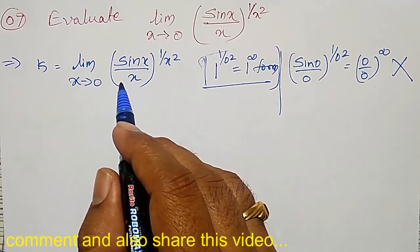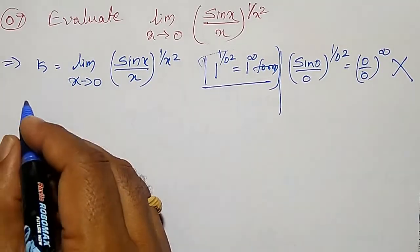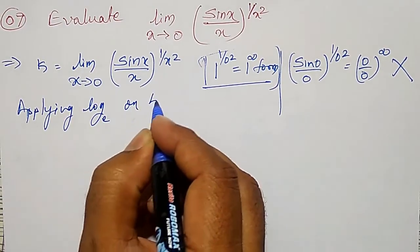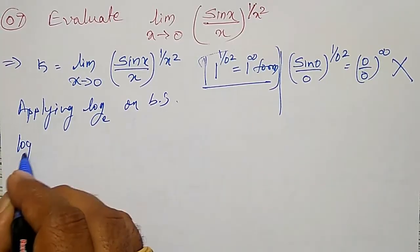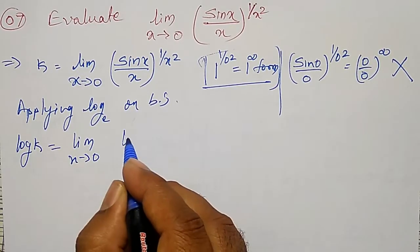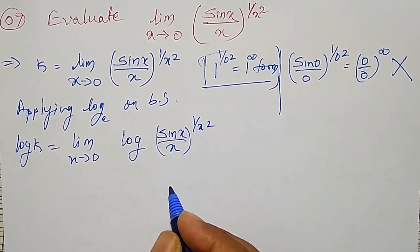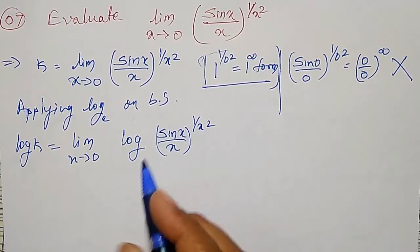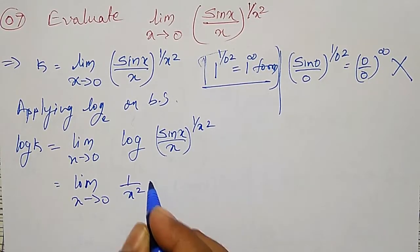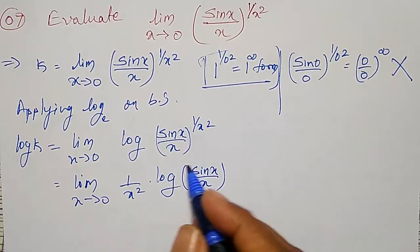The given indeterminate form is 1 raised to infinity. To evaluate this 1 raised to infinity form, I apply log on both sides. Applying log to the base e on both sides: log k is equal to limit as x tends to zero of log of (sin x / x) raised to 1 by x square.